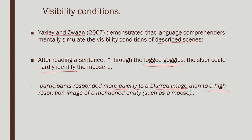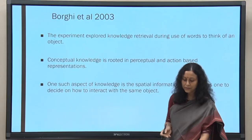What they found was that participants responded more quickly to a blurred image than to a high-resolution image of the mentioned entity. This is a very significant finding — the sentence says that the skier could not see clearly because his goggles were fogged. If the comprehender is not putting himself in the skier's shoes, there should be no difference; in fact, a high-resolution image should be easier to identify. However, the reverse happened — after reading a sentence about a blurred image, participants found the blurred image far more quickly.